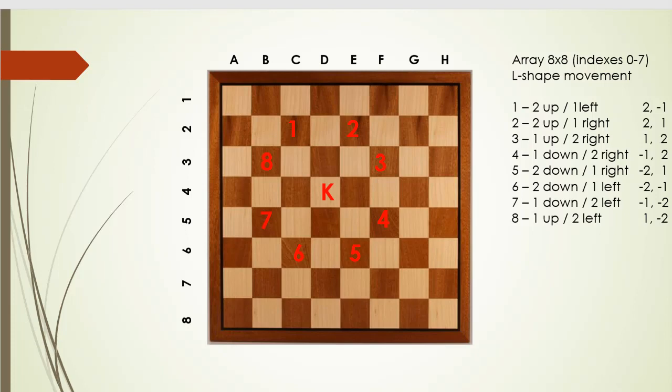So for example, the first move could be made with 2 squares up which is vertically and 1 horizontally to the left. Or it could also be 1 square horizontally to the left and then 2 steps vertically to the top. Or for example move 3 could be 2 squares horizontally to the right and then 1 square vertically which is up or 1 square vertically down.